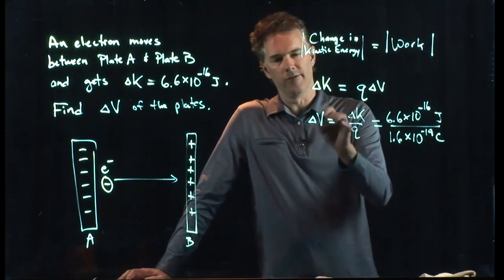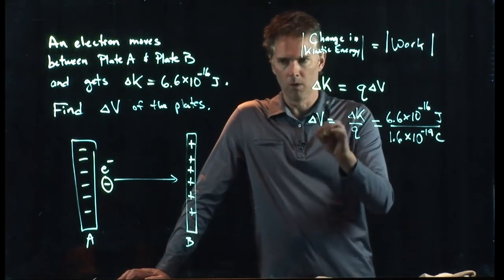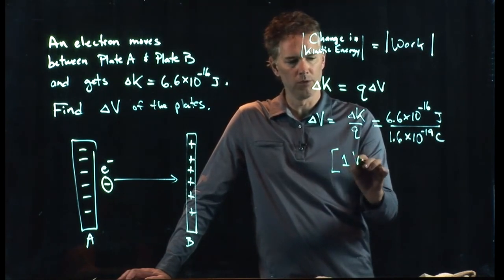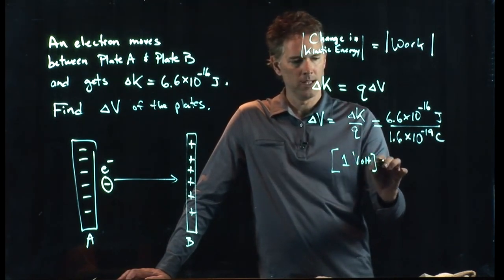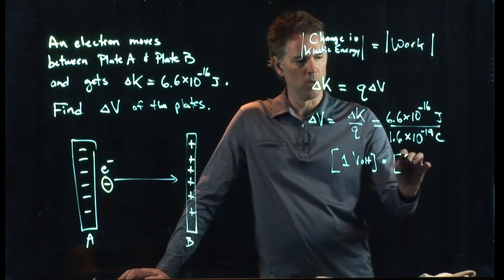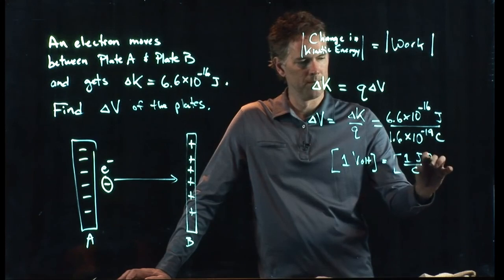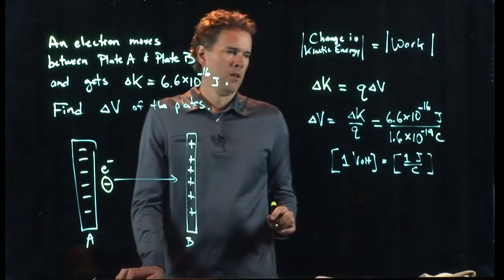The units of V are volts or joules per coulomb. And in fact, one volt equals one joule per coulomb.